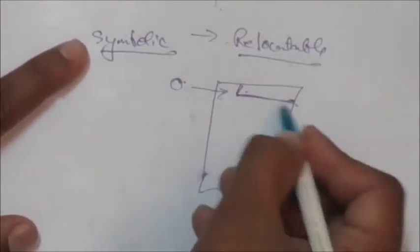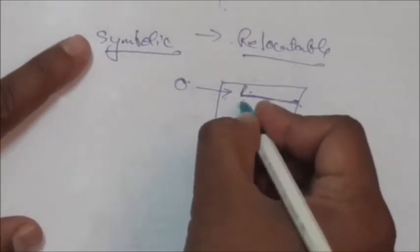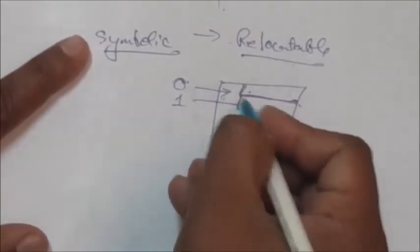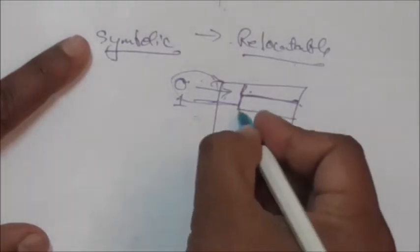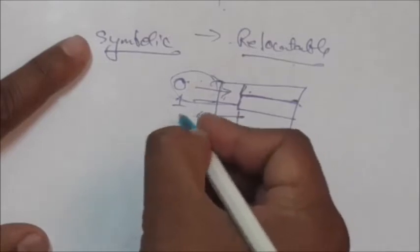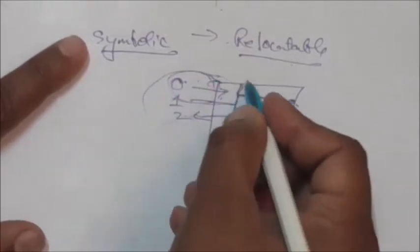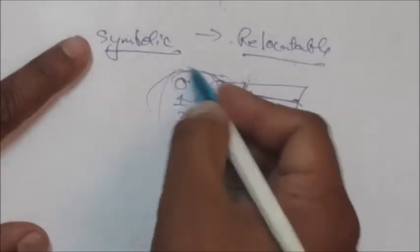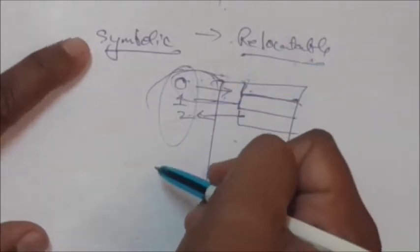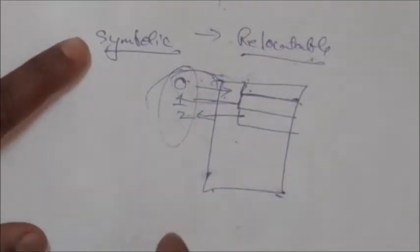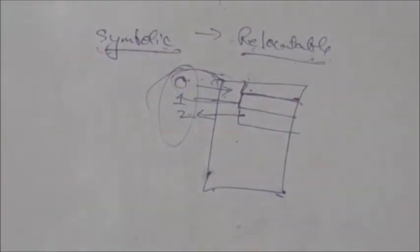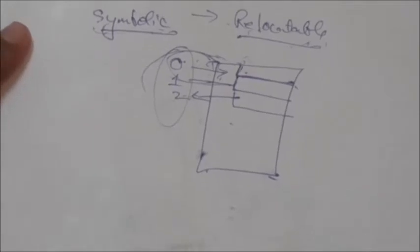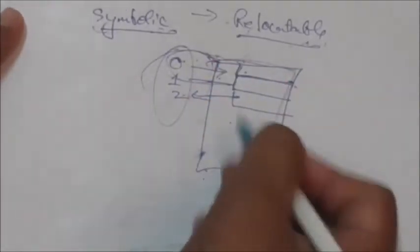The second instruction's address will be one, specifying it is one byte away from the beginning of the module. The third instruction's address will be two, specifying it is two bytes away from the beginning of the module, and so on. Such types of addresses are called relocatable addresses. So if it is not known where the process will reside in main memory at execution time, then at compile time these symbolic addresses are bound to relocatable addresses.